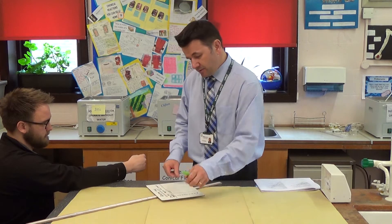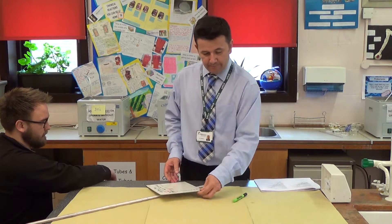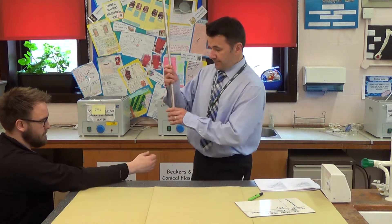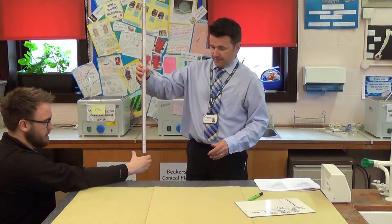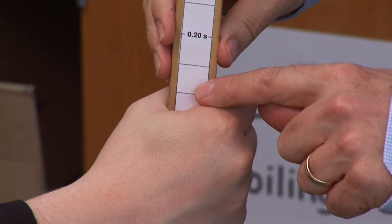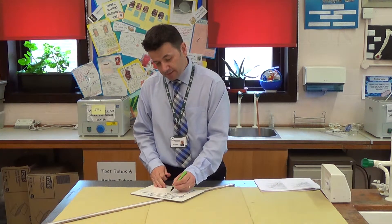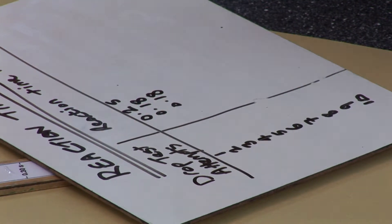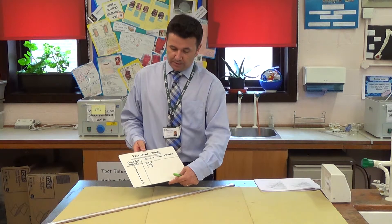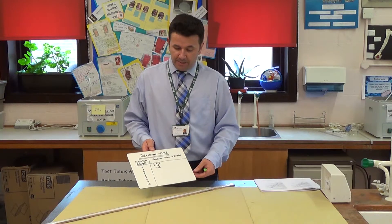I'm going to record it. We'll do it for a third time, and again I'm going to record 0.18 seconds. What you do is continue to do that for 10 times, recording all the data in a table of results, and you're then going to analyse the data.